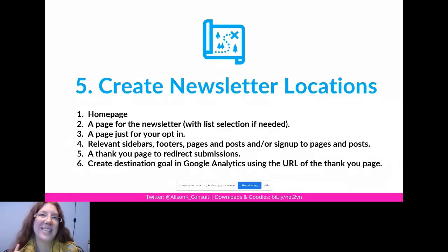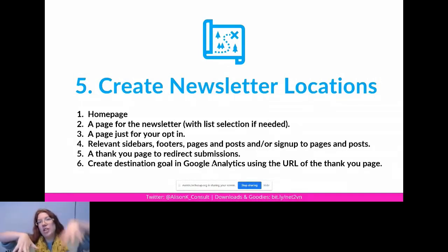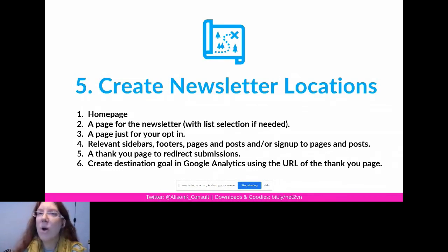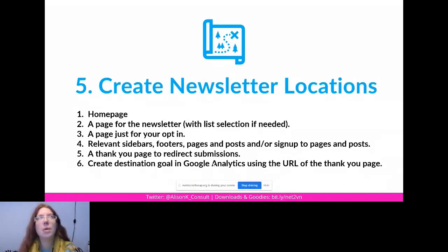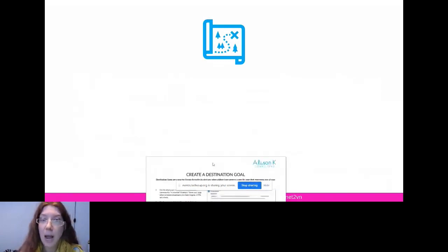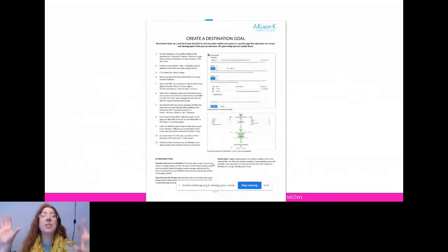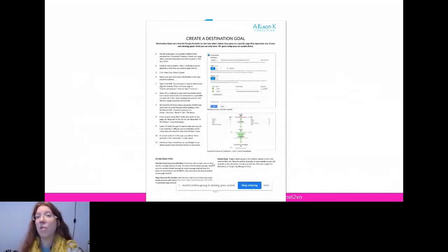When you do that redirect, you can create a destination goal in Google Analytics. That's how you track conversions and see how many people signed up for your newsletter. You can also find out which page drove the most sign-ups, so you don't have to reinvent the wheel next time. Check your destination goal in Analytics to know whether the home page or another page performs best. Once everything is set up, sprinkle the opt-in everywhere and make sure sign-ups lead to a thank you page you can track in Google Analytics.